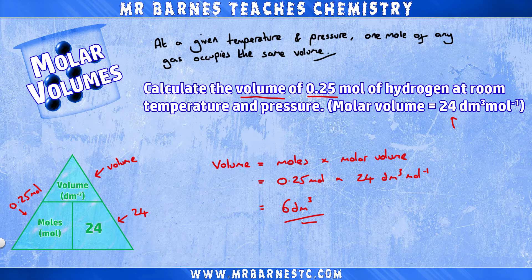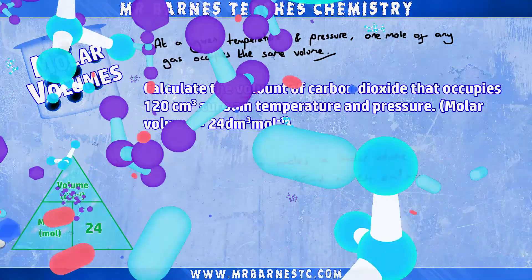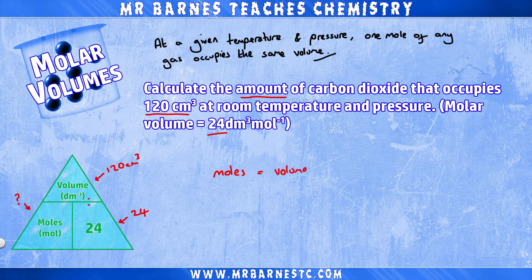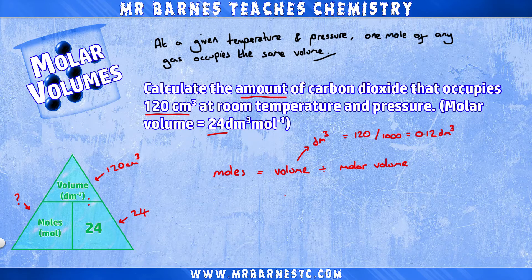Provided the temperature and pressure stay the same, those calculations are all the same — and usually at GCSE that's all you'll be given. The next example is a rearranging one: calculate the amount of carbon dioxide that occupies 120 centimetres cubed at room temperature and pressure. The amount means moles, so from the triangle it's volume divided by molar volume. Convert 120 cm³ to 0.12 dm³, then divide by 24.